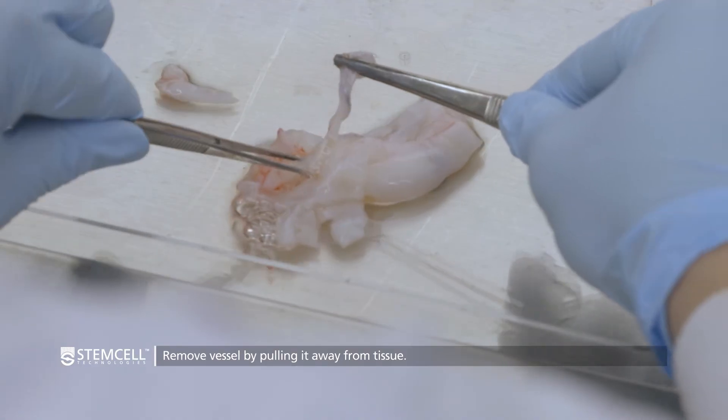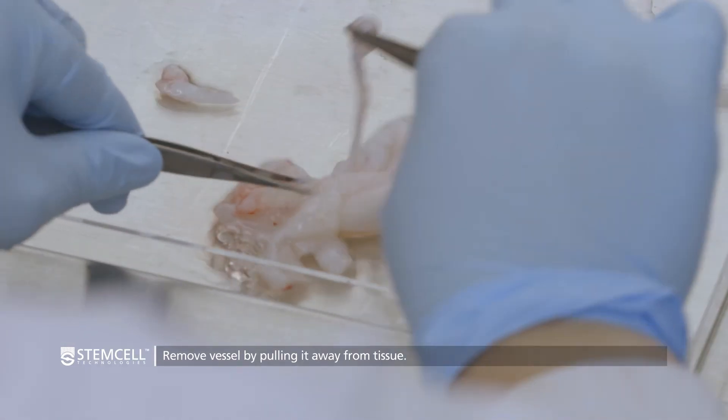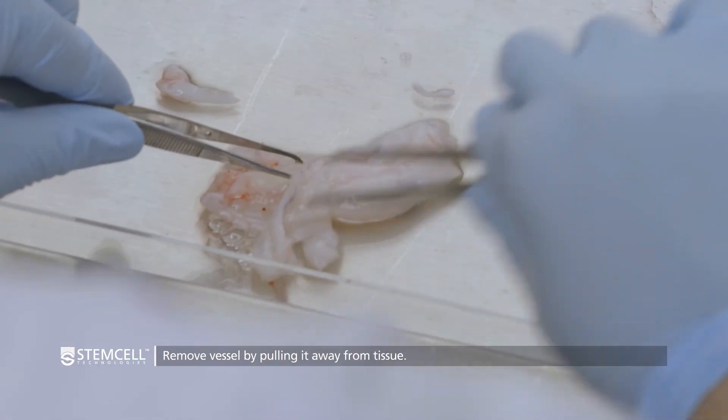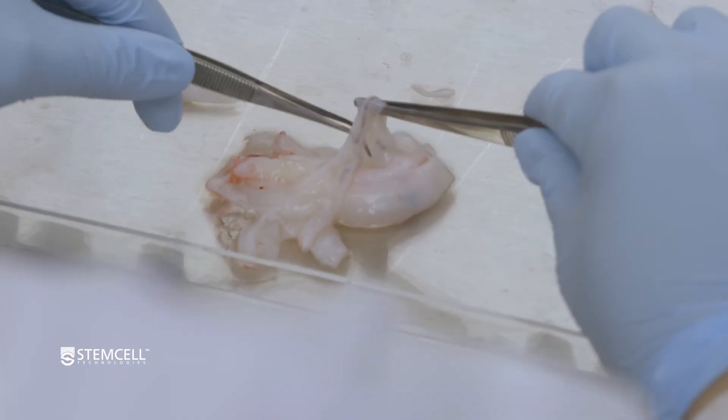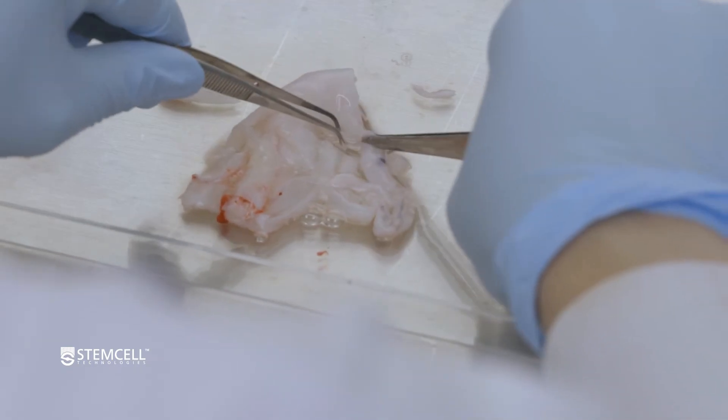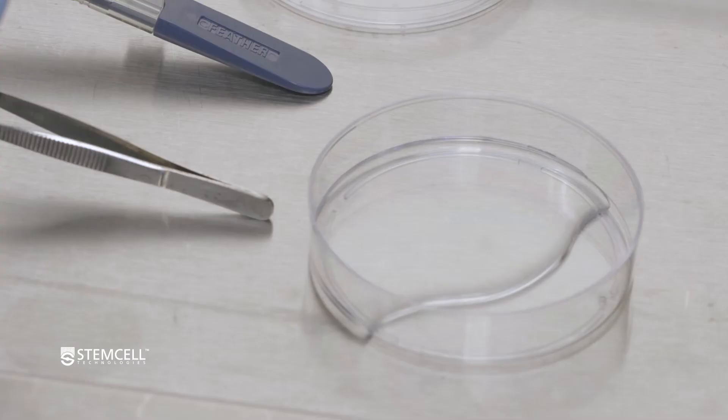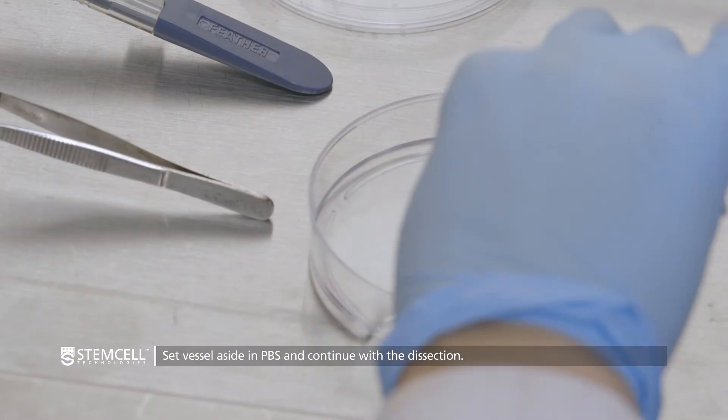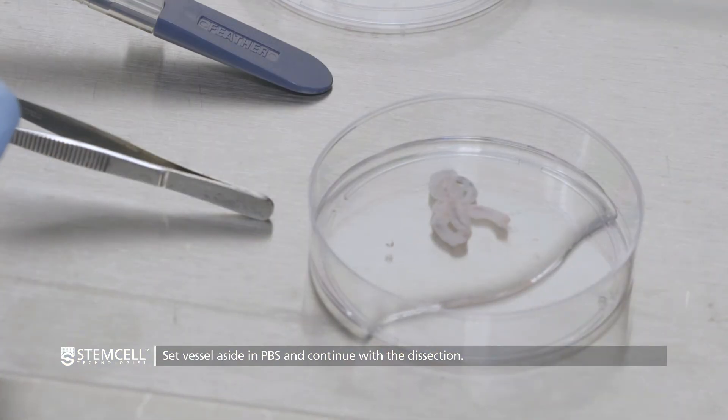Remove each vessel by clamping with the forceps at one end and slowly pulling away from the rest of the tissue. The vessel will be surrounded by a layer of perivascular Wharton's jelly, one to three millimeters thick. Set these vessels aside in PBS while dissecting the rest of the sections.